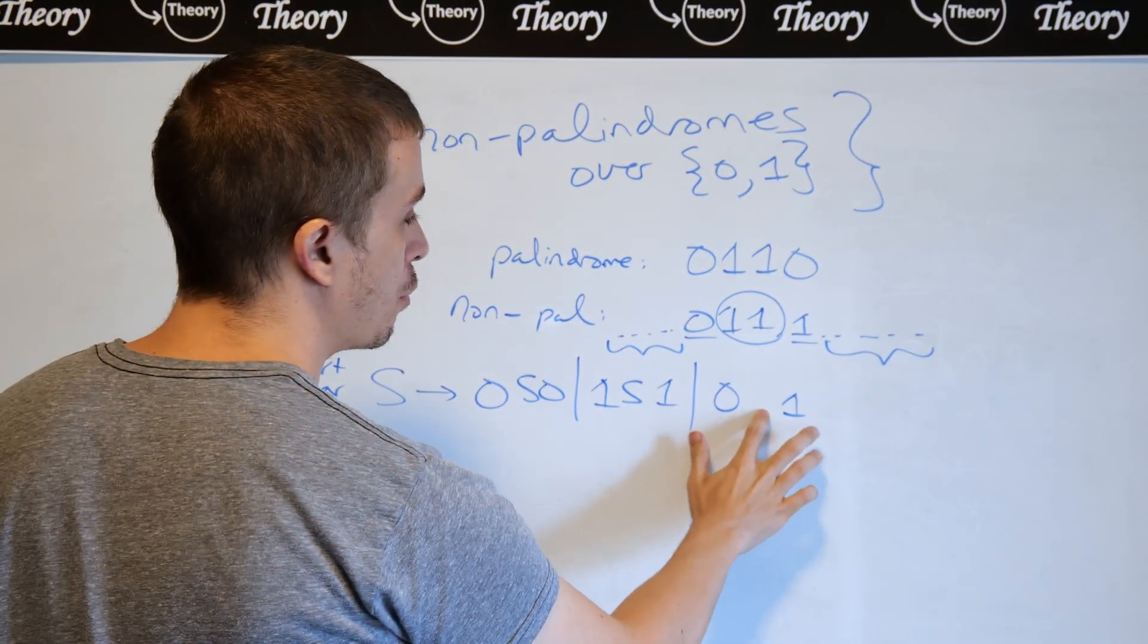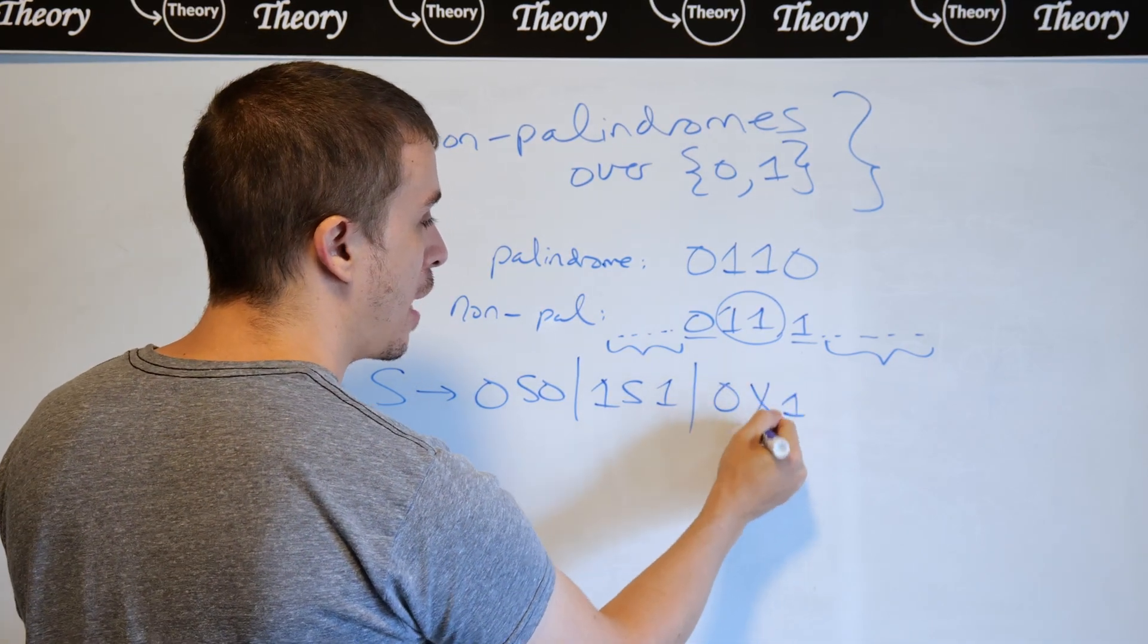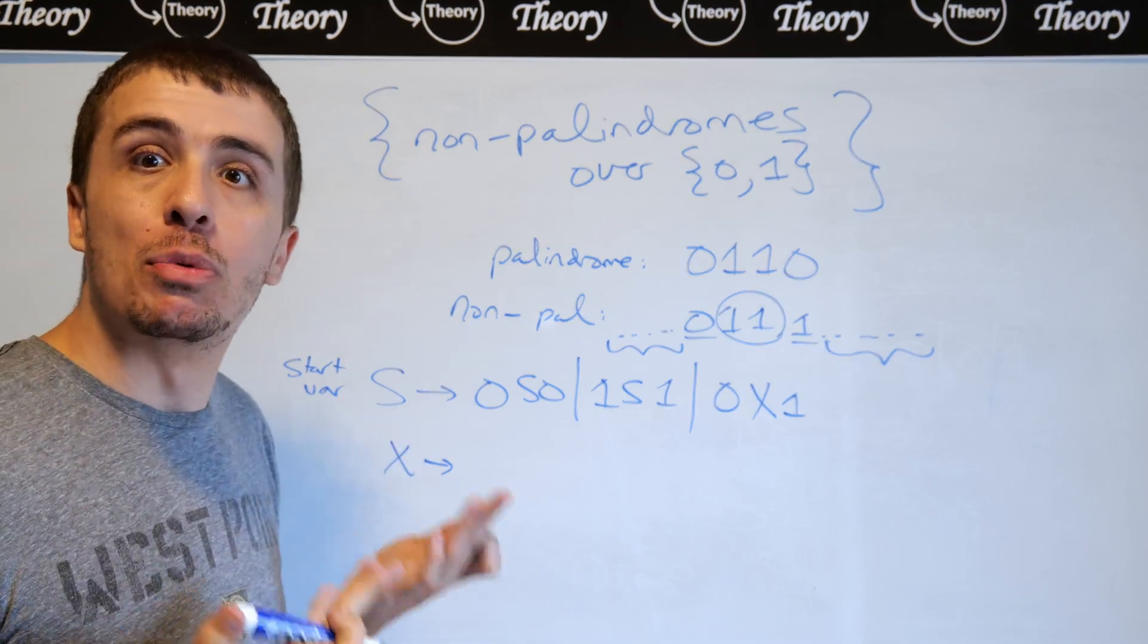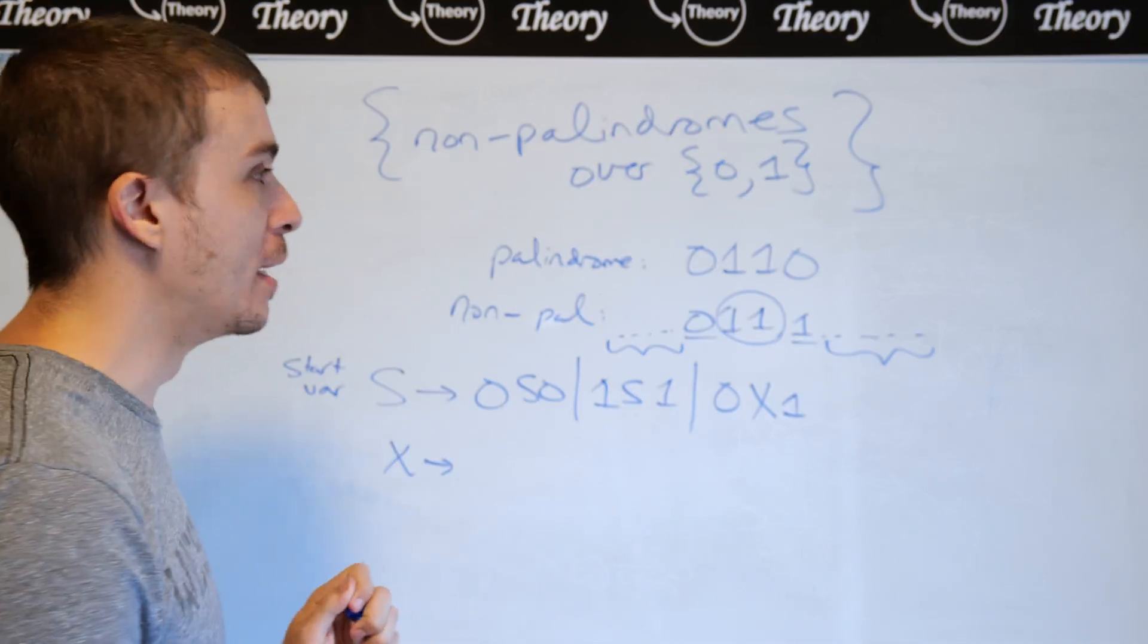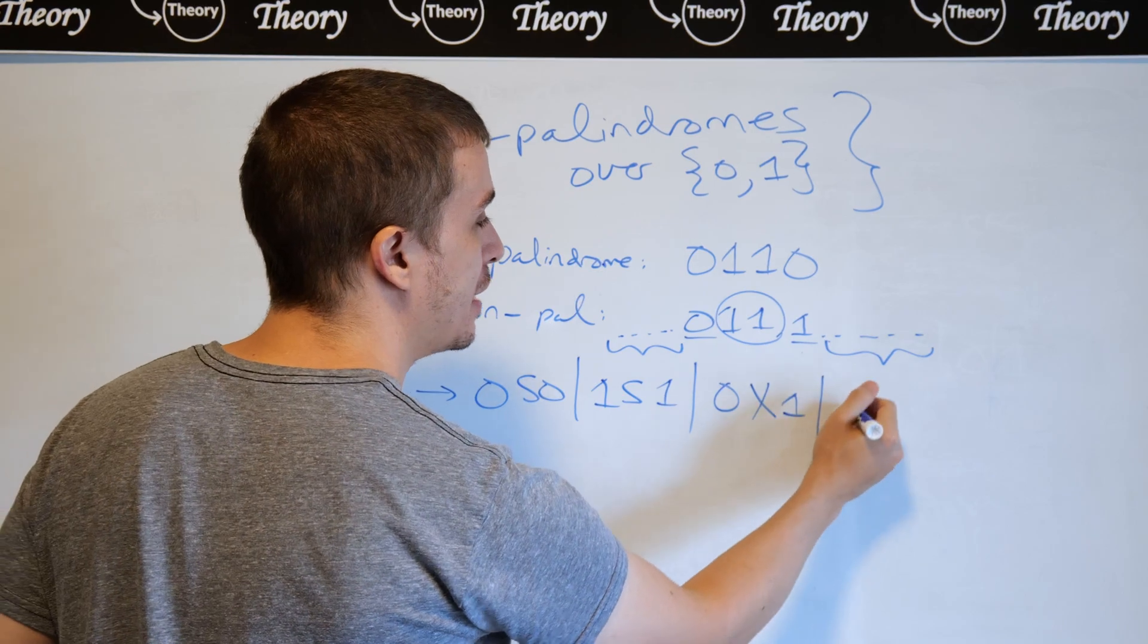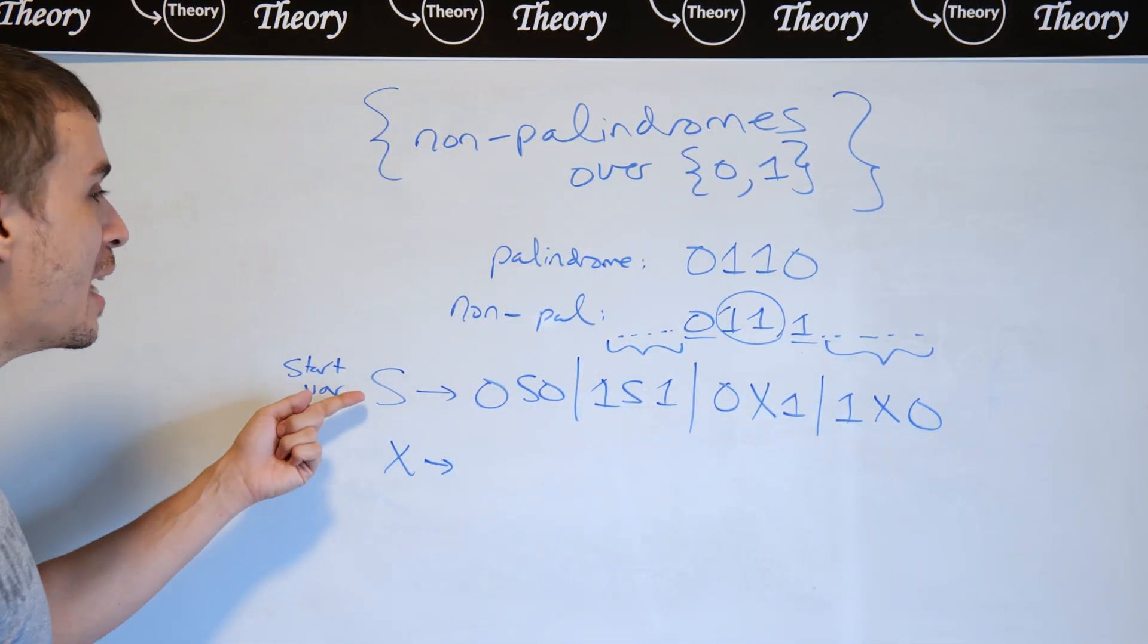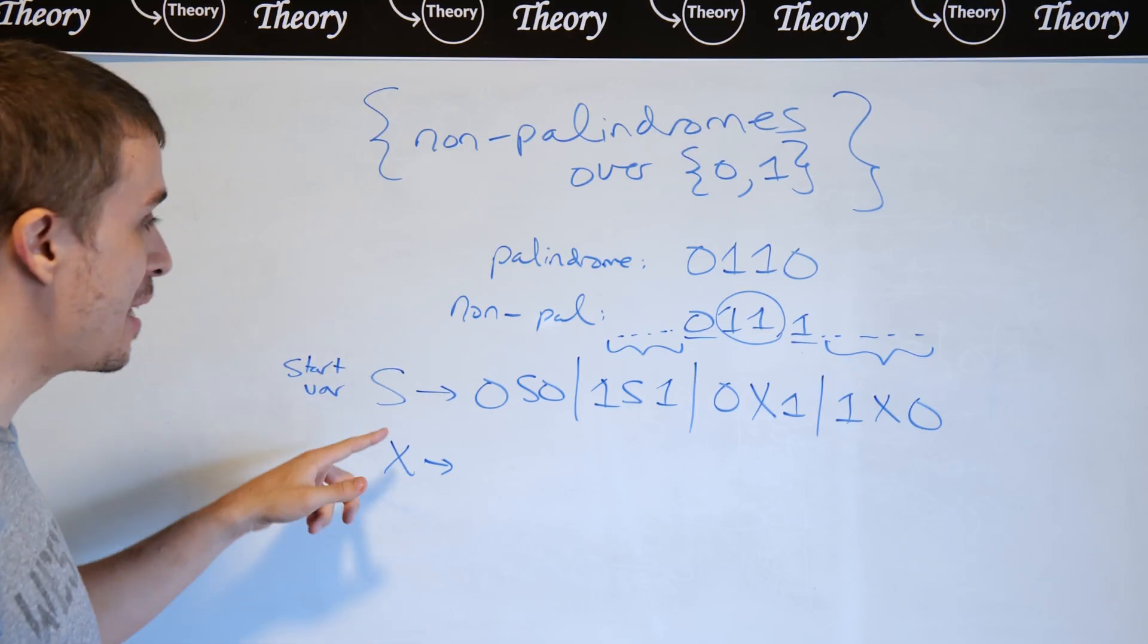What we want to do is we want to go to a different variable I'm going to call x. And x is going to handle actually getting to a string of terminals, which is what we want. And the other condition of 1x0 is also going to be here. So note that s is finally complete at this point.